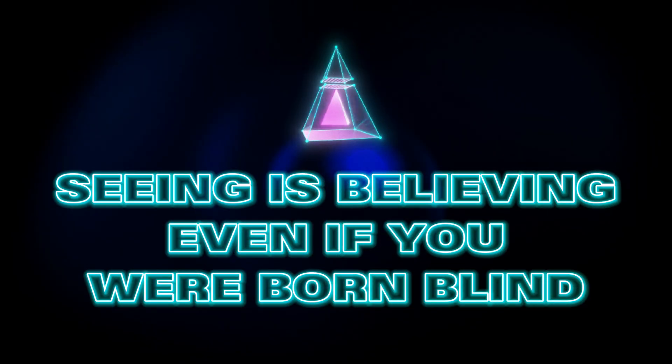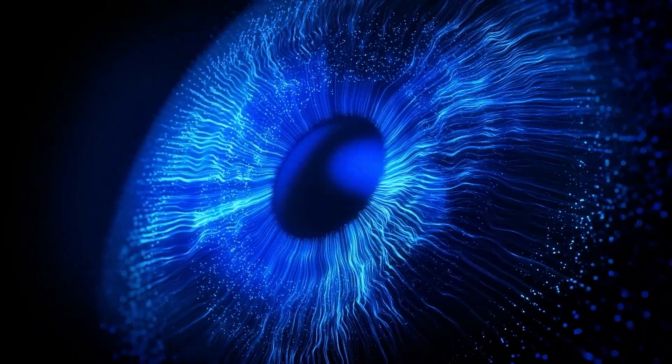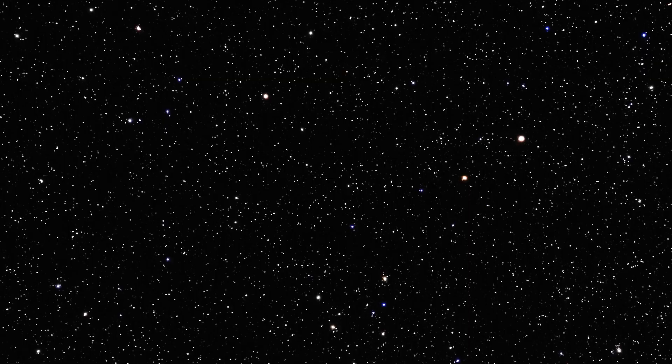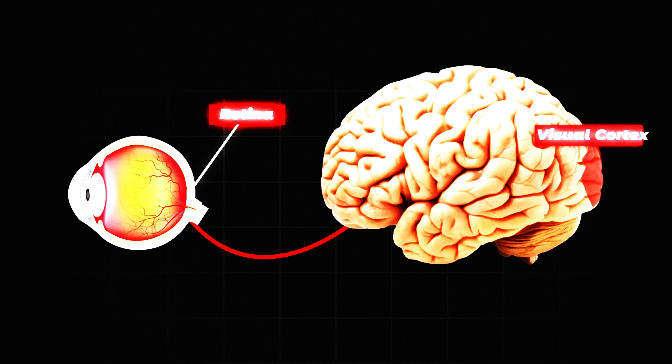Seeing is believing, even if you were born blind. One of the most mind-bending claims about Blindsight. Elon says it could restore vision to people born completely blind. Let that sink in. If you've never seen light, shapes, faces, or colors, how does the brain even know what to do with visual input? Turns out it doesn't need to know. The brain is basically a giant pattern-matching machine. It just needs data, and Neuralink is ready to deliver it wire by wire.